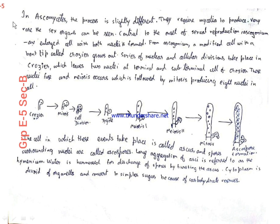In ascomycetes, the process is slightly different. They require mycelia to reproduce and sex organs can be rarely seen. Central to the onset of sexual reproduction, the ascogonium, which is an inert cell, can be seen. It has two nuclei. From the ascogonium, a modified cell with a bent tip called a crozier grows out. A series of nuclear and cellular divisions takes place in the crozier, which leaves two nuclei, a terminal and a subterminal cell of the crozier. These nuclei fuse and meiosis occurs, which is followed by mitosis, which produces eight nuclei. The several mitotic divisions occur to form the zygote, and the zygote then undergoes meiosis and mitosis to produce these eight nuclei.